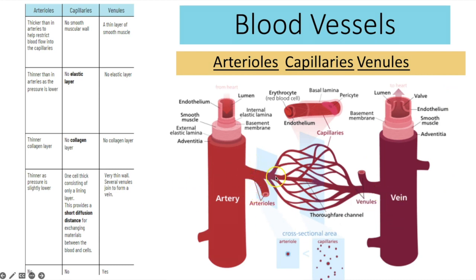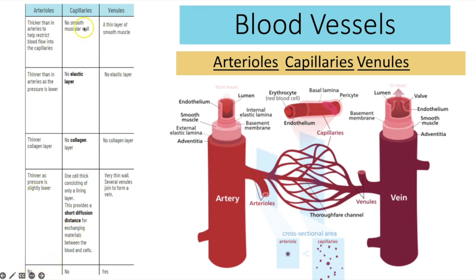The arterioles connect the arteries to the capillaries. They have a thicker muscular wall so they can constrict to restrict blood flow before it enters the capillaries, preventing damage and slowing the blood. The elastic layer is thinner than in arteries because the pressure is lower, so it doesn't need to stretch and recoil as much. There's also a thinner collagen layer for the same reason, and the overall wall thickness is thinner than in an artery. There are no valves in arterioles.